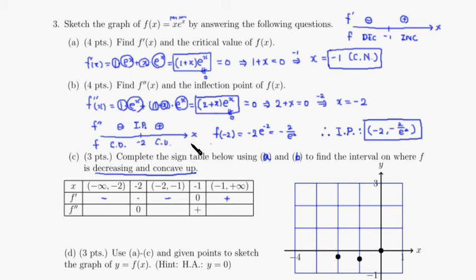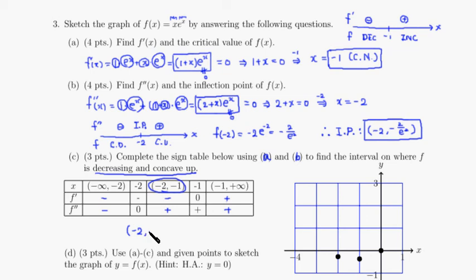From the second derivative number line: before negative 2 the second derivative is negative (concave down), and after negative 2 it's positive (concave up). For f to be decreasing, the first derivative must be negative, and for concave up, the second derivative must be positive. Both conditions are satisfied on the interval from negative 2 to negative 1. Therefore, the interval where f is decreasing and concave up is (-2, -1).